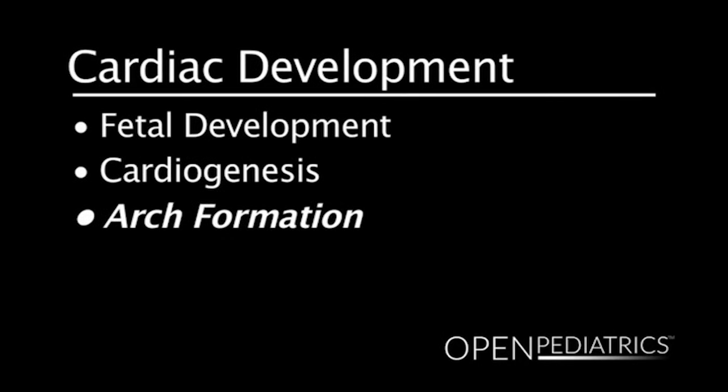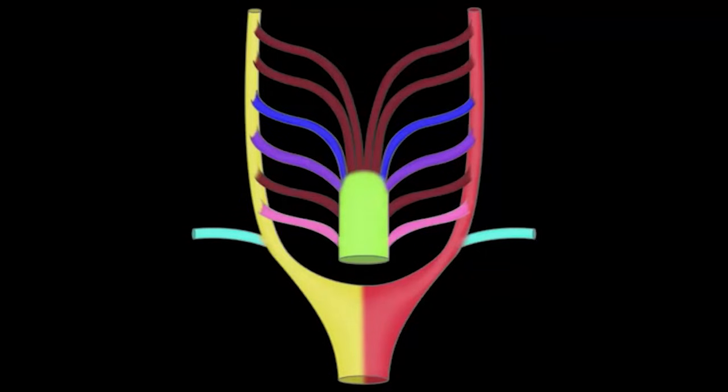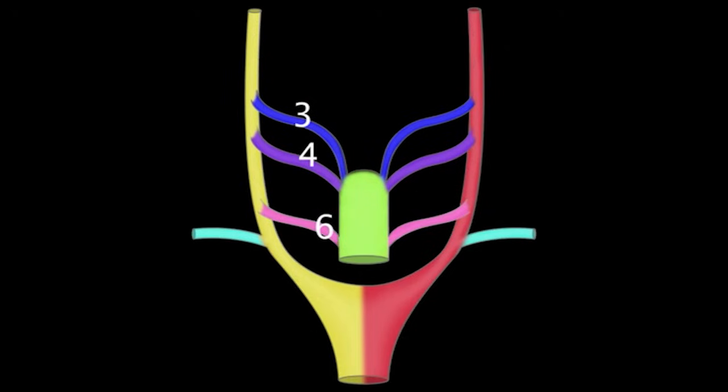Arch formation. The aorta and pulmonary artery and their branching vessels are formed from the brachial arch arteries. Initially there are six pairs of brachial arch arteries. The first, second, and fifth pairs disappear forming ligaments that hold the heart in place.